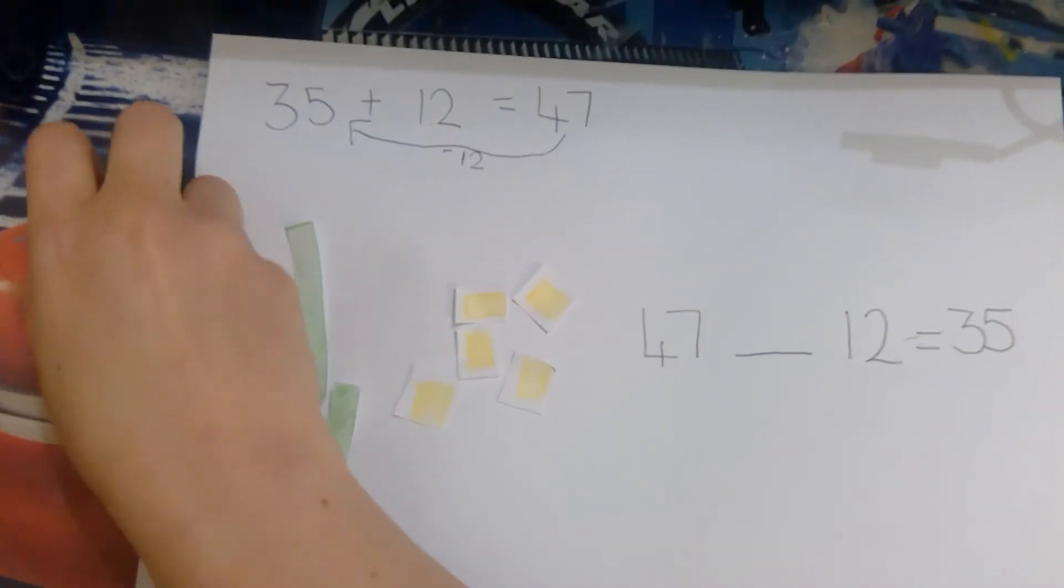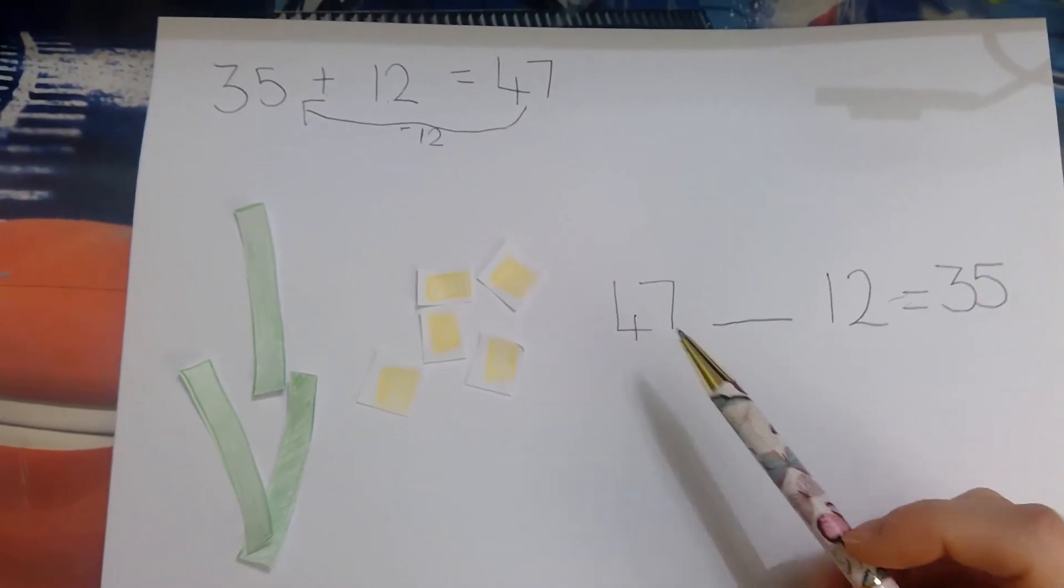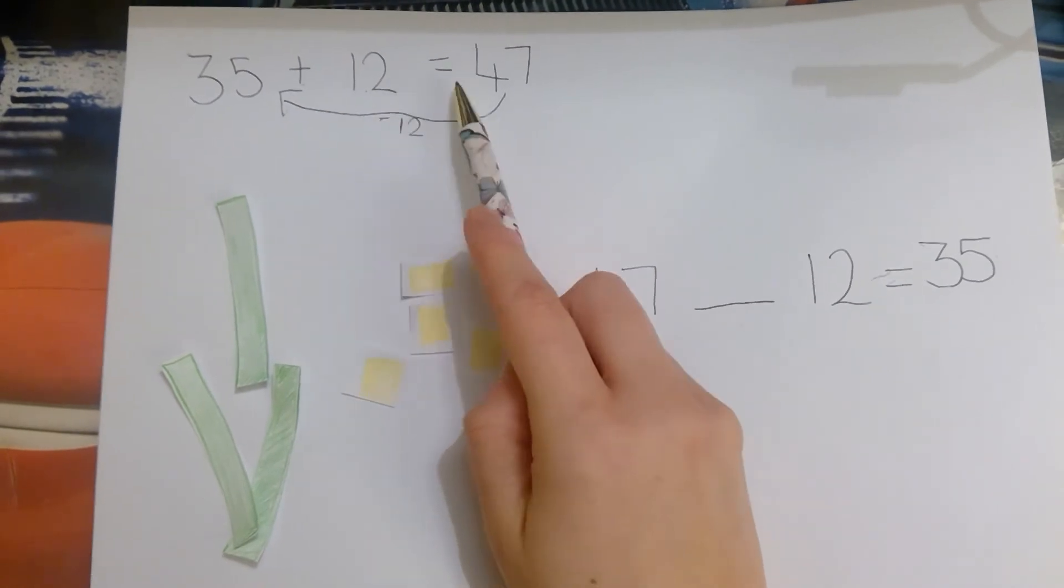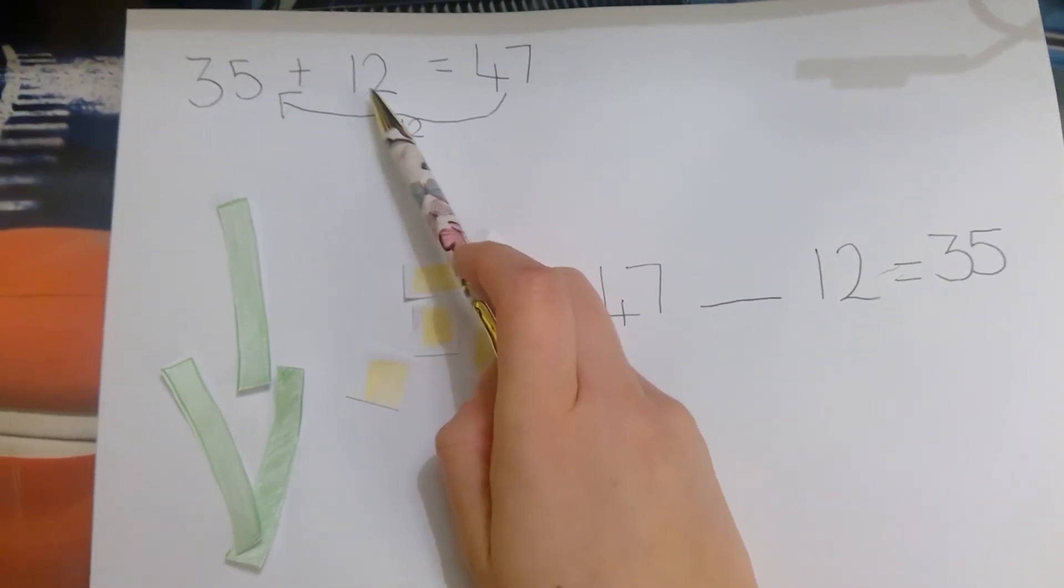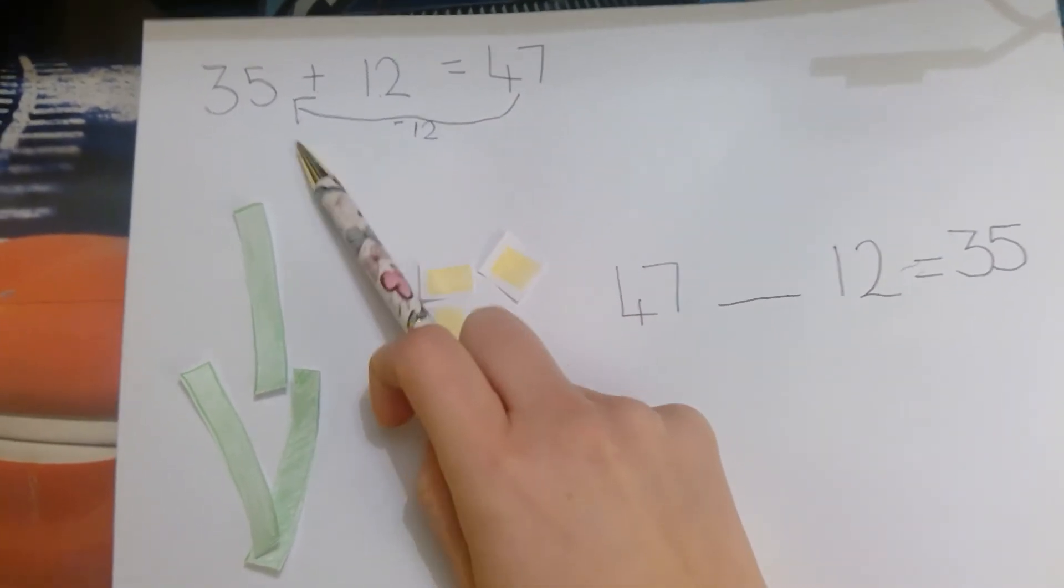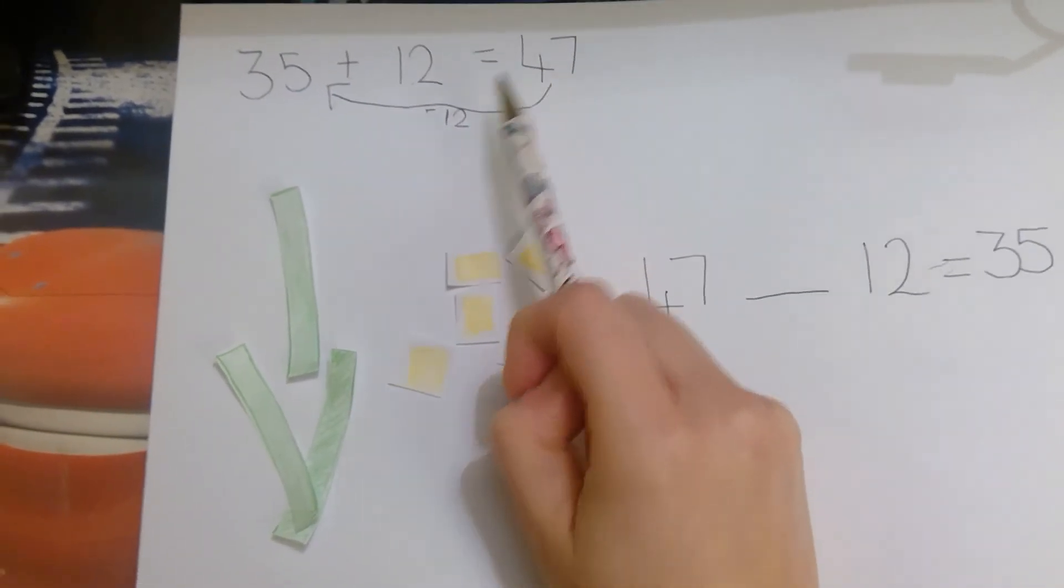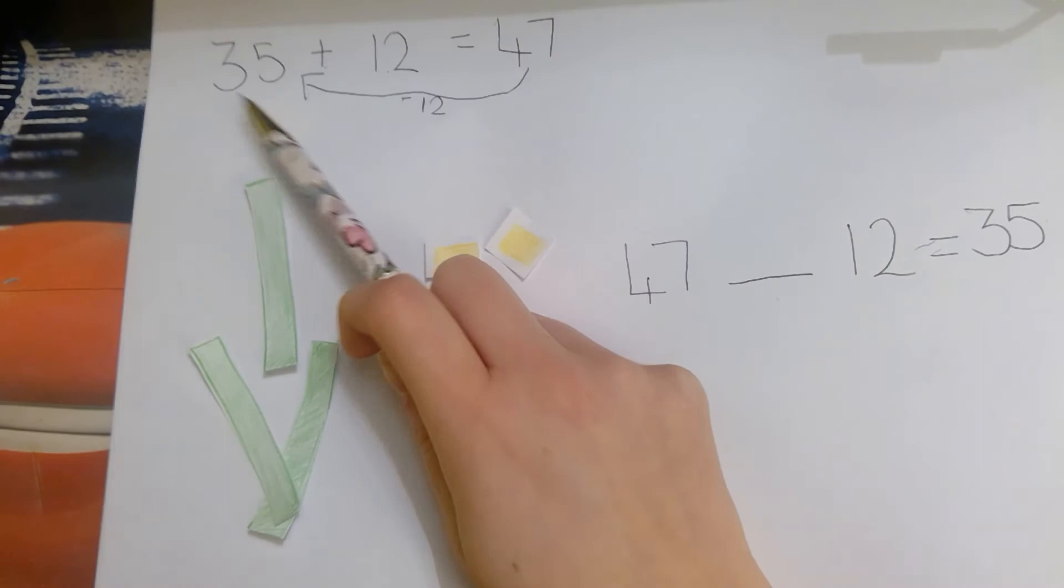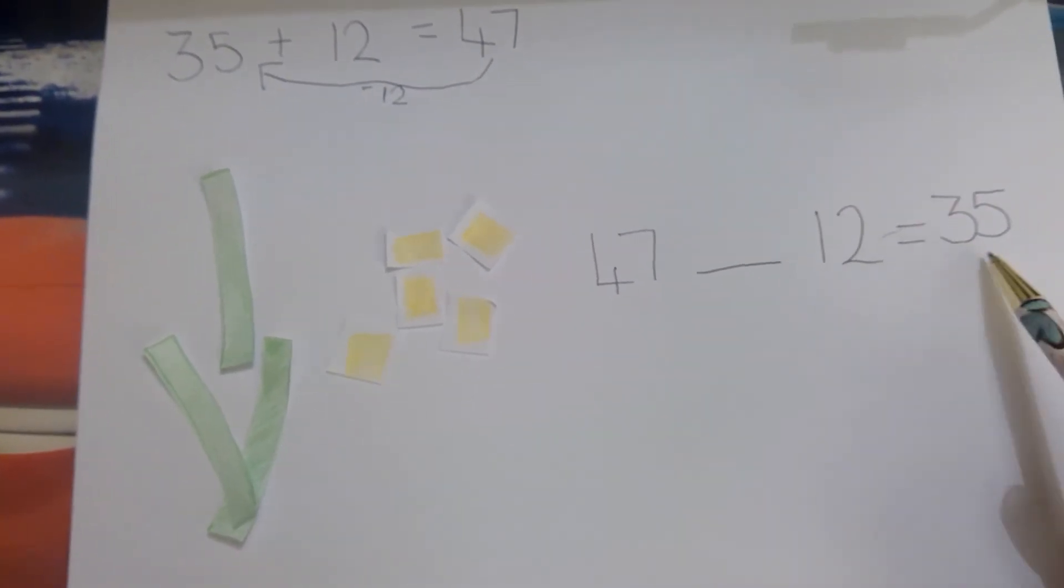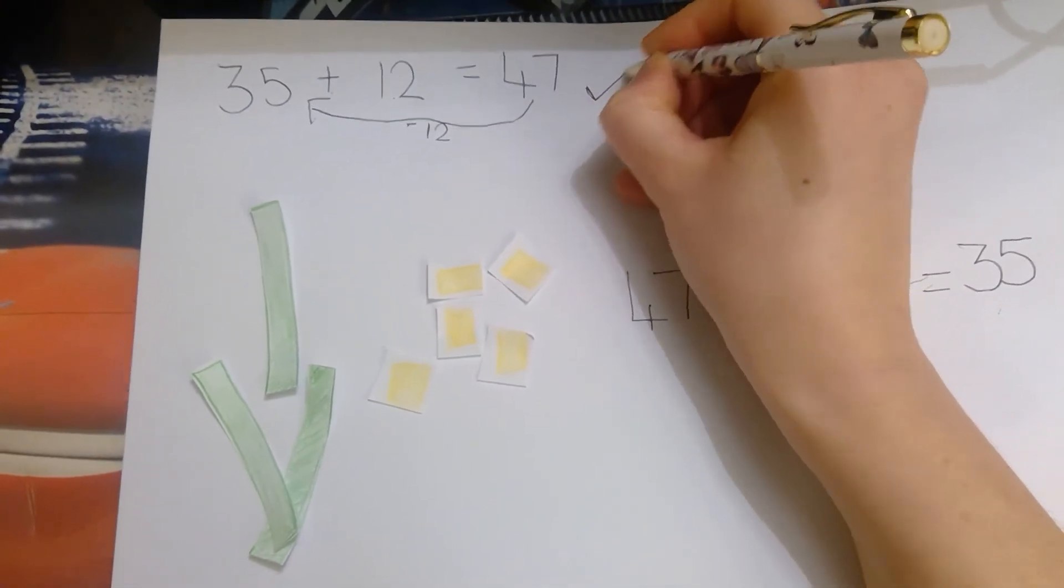Step 6. Check the calculation was correct. If this calculation that you started with is correct, if 35 add 12 does equal 47, then when you use the inverse, it should give you 35. 47, take away 12, should give you 35. So 47, take away 12, did give us 35. So we know that is correct.